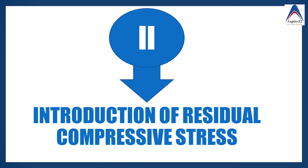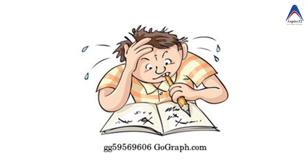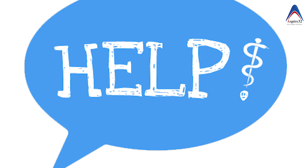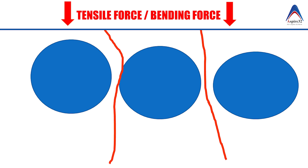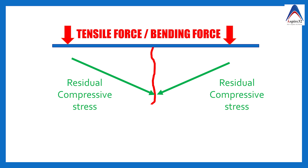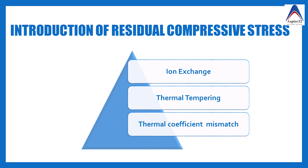The second major change was the introduction of residual compressive stress. Since ceramic fractures because bending forces open up cracks, compressive stress is introduced into the ceramic at the end of fusion. These forces try to compress the crack shut, so any tensile force must first overcome this counteracting compressive force before opening the crack. Residual compressive stress is generated by three techniques: ion exchange (chemical tempering), thermal tempering, and thermal coefficient of mismatch.